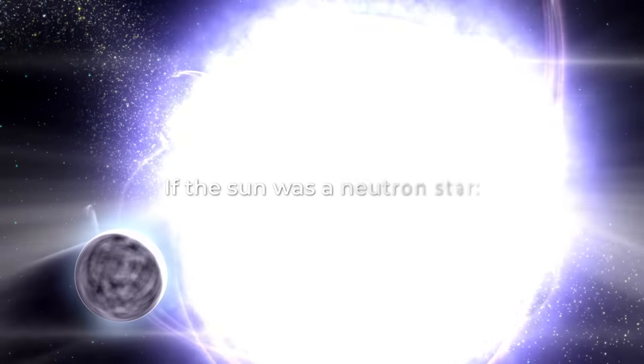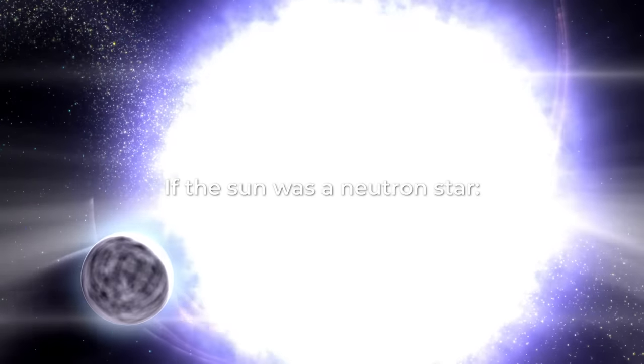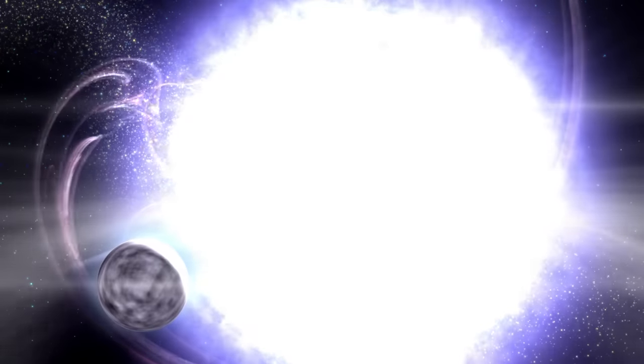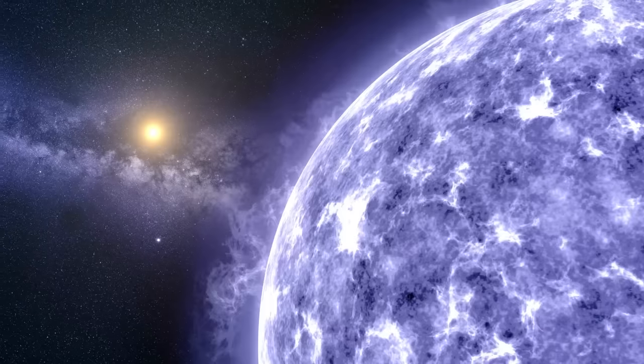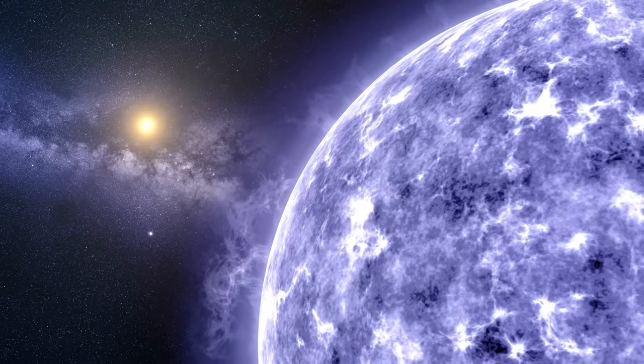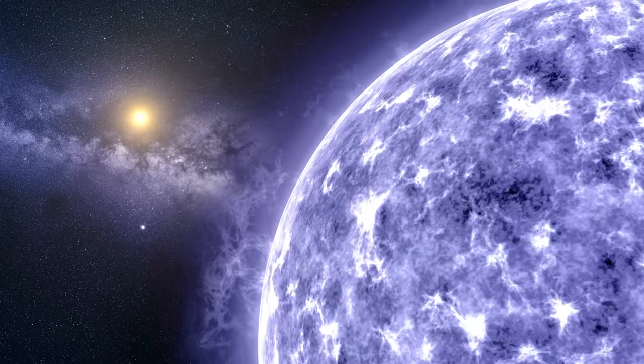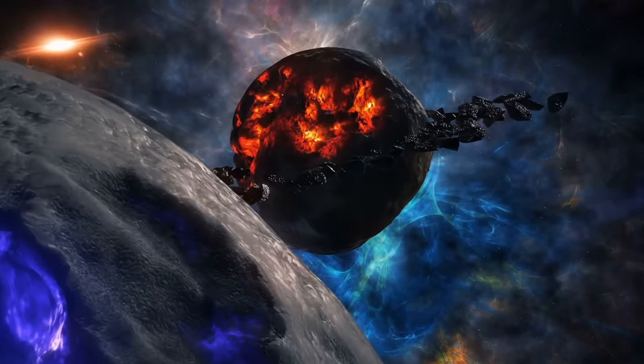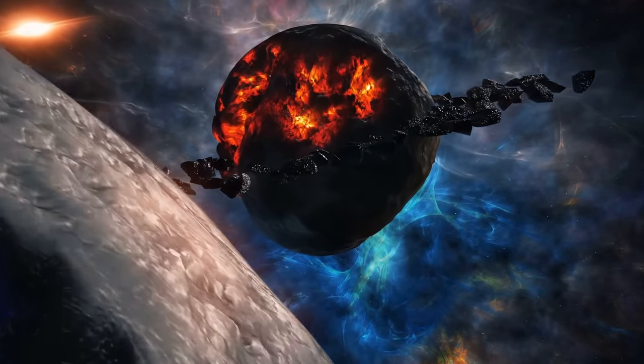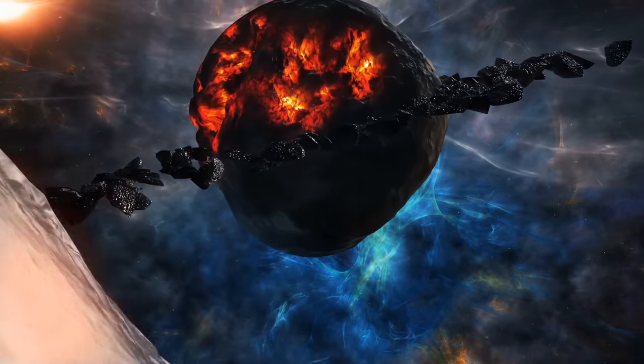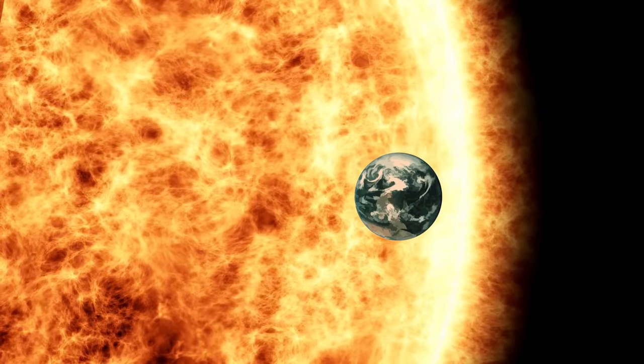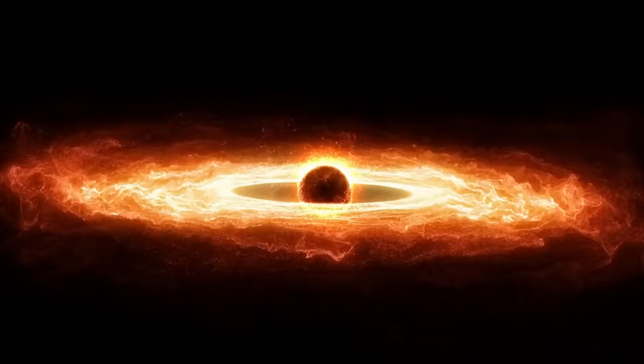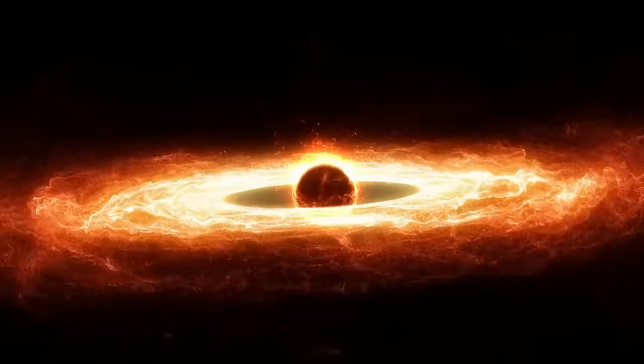If the sun was a neutron star? Now imagine a giant monster with a pull so strong that it's two billion times stronger than anything you've ever felt. This monster is called a neutron star, and if we would replace the sun with it, the planets in our solar system would be in big trouble. The gravitational force of a neutron star is so strong that it would tear planets apart, pulling them towards the monster until they were completely destroyed. The debris left behind would form an accretion disk around the neutron star, like a ring of dust and rubble.